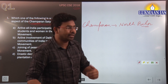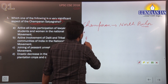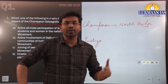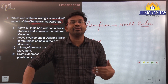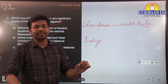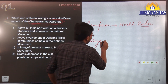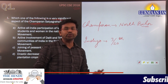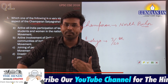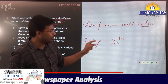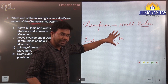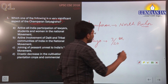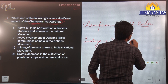In the region of Champaran, European planters were forcing local peasants to grow indigo in 3/20th of their field. This was causing huge loss in revenue generation for the peasants, who were agitating against this forceful arrangement. This particular system was known as the Tinkathiya system.